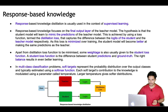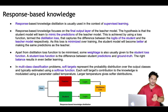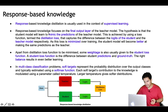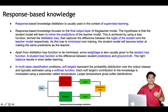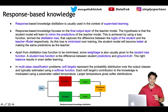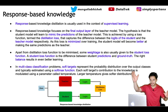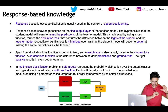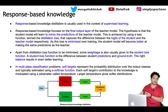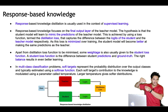Response-based knowledge is usually used in the context of supervised learning, because only in supervised learning do we have a target output and a predicted probability. Response-based knowledge focuses on the final output layer of the teacher model. The hypothesis is that the student model will learn to mimic the predictions of the teacher model. This is achieved using a loss function called distillation loss, which captures the difference between the logits of the student model and the logits of the teacher model.